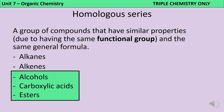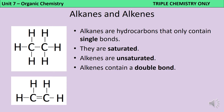Within GCSE organic chemistry, we meet various different examples of homologous series, which are groups of compounds that have similar chemical properties because they have the same functional group and the same general formula. For combined science you would have looked at alkanes and briefly alkenes, but for triple science we need additional information about alkenes and also some information about alcohols, carboxylic acids and esters.